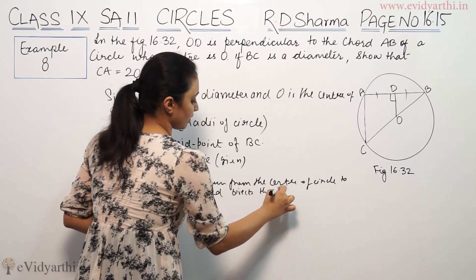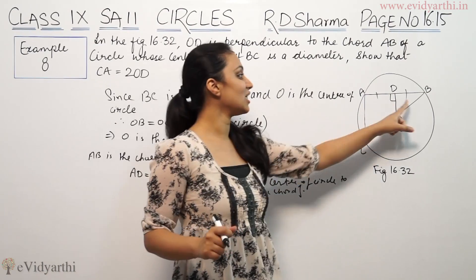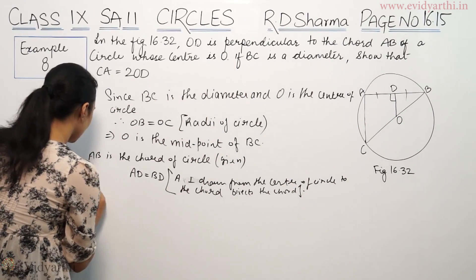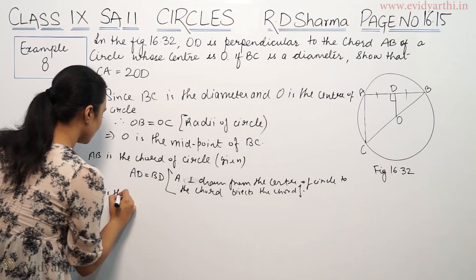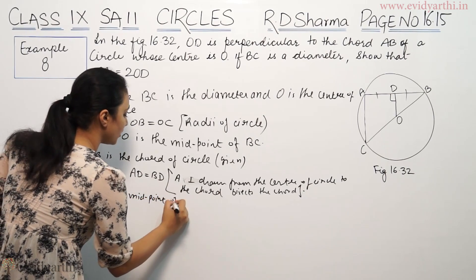So that means D is the midpoint of AB. This implies D is the midpoint of AB.